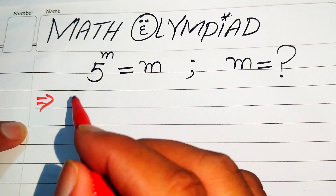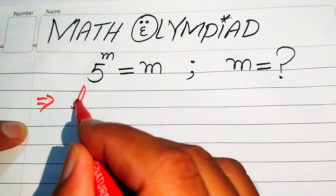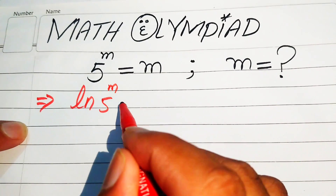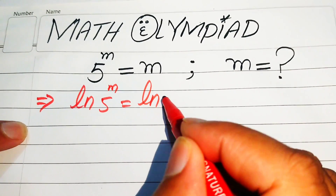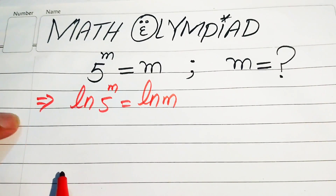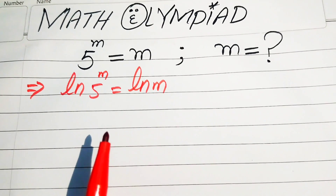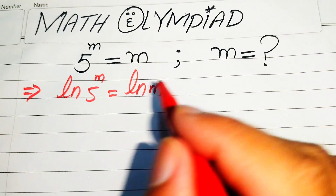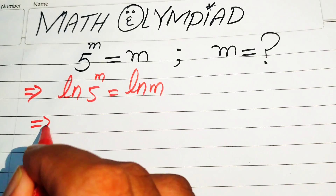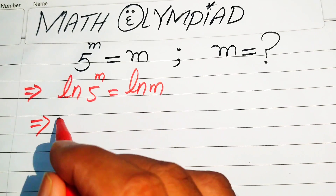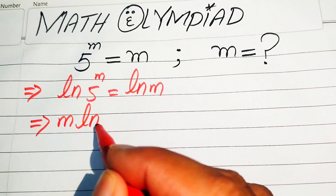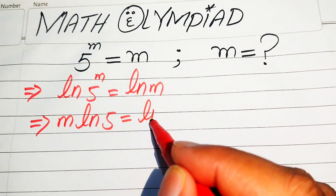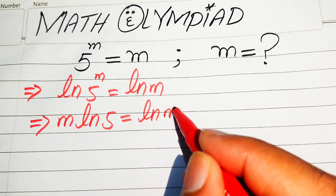When you take the log on both sides, it will be written as natural log of 5 to the power of m equals natural log of m. We use the nice property of log and move the exponent m to the front, so it becomes m times log 5 equals log of m.